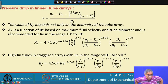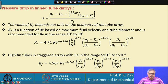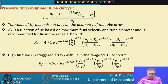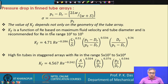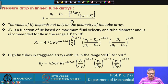Now we can understand what is in the slide. Sigma is calculated from the tube array pitch. One pitch, the root diameter of the fin, the height of the fin, the width of the fin, and the space between two fins all come into the formula. The value of K_f depends not only on the geometry of the tube array but also on other factors. K_f is a function of Reynolds number based on maximum fluid velocity and tube diameter, and is recommended for Re in the range of 10³ to 10⁵.